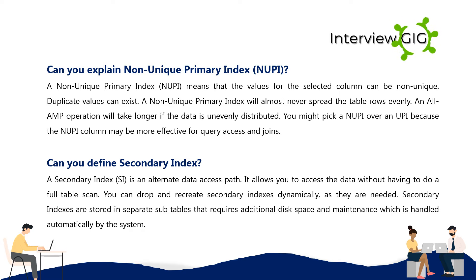Can you explain Non-Unique Primary Index (NUPI)? A NUPI means that the values for the selected column can be non-unique — duplicate values can exist. A NUPI will almost never spread the table rows evenly, and an all-AMP operation will take longer if the data is unevenly distributed. You might pick a NUPI over a UPI because the NUPI column may be more effective for query access and joins.